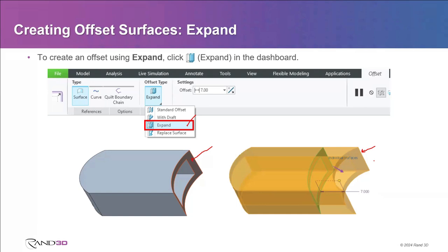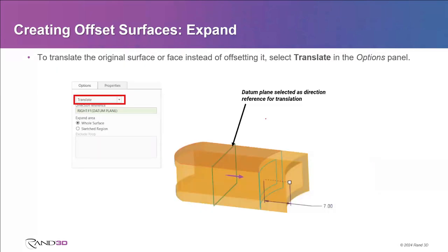Besides doing an offset, when you're in the expand option, you can go under Options and ask it to translate the surface instead. The translate keeps the exact same shape and size as the original surface and just moves it. When you switch to translate, you need to pick something planar to translate normal to, or something linear to translate parallel to, and tell the computer how far. Since it's a translation, there's no limit as to how far you can go — the new face has exactly the same shape and radius.